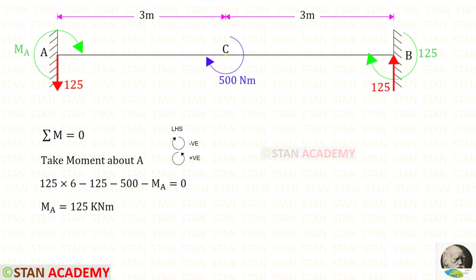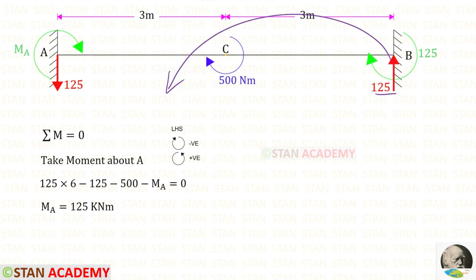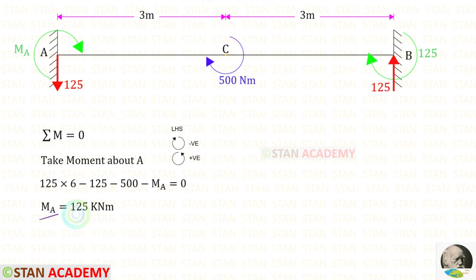Now let us take moments about A and find MA. We assume that MA is acting in the clockwise direction. RB is acting in the anti-clockwise direction, so it will be positive with a distance of 6. The other three moments are acting in the clockwise direction, so all three are negative. Finally, for MA we will get a positive value, which means our assumption is correct — MA is acting in the clockwise direction.